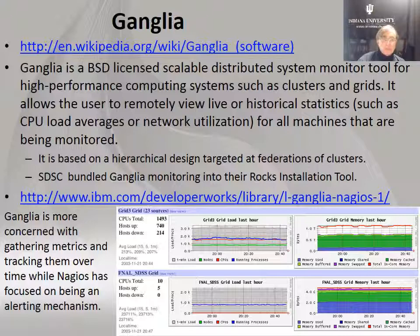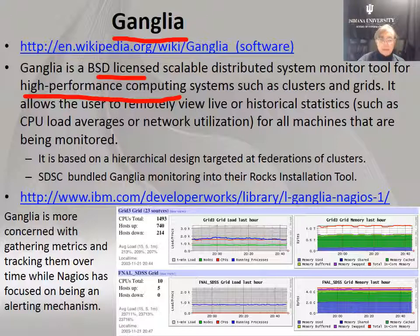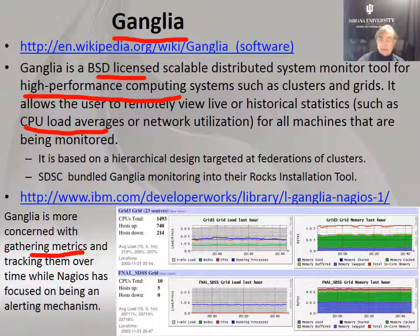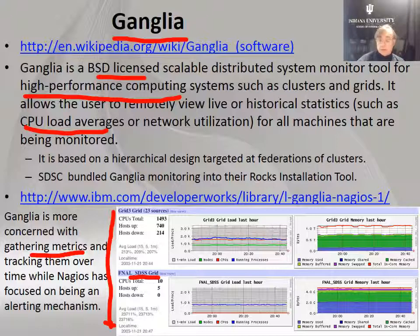Monitoring typically tells you how much you're using your system. You can tell when your system is not being used, when you're wasting your computers, and maybe when they're overburdened. Here we have Ganglia, which is another important system of this type. Ganglia and Nagios are actually relatively similar. Ganglia has a BSD license and comes directly from the high-performance computing community. It's particularly good at producing visualizations and logs of how much your CPU and network are being used. Ganglia is really good at gathering metrics and tracking them over time, while Nagios focuses more on alerting people when things go wrong.